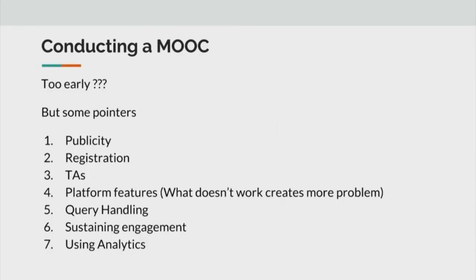We will give you some pointers that should be helpful. One - and there is no priority order, all of them matter. Publicity - people should know what is coming up, and there are multiple channels nowadays for that. Registration - having teaching assistants for helping you out, and the processes for registration also differ. TAs can also be associate faculties. You have to think of innovative ways of getting your teaching assistants - they need not be the conventional definition of a student.